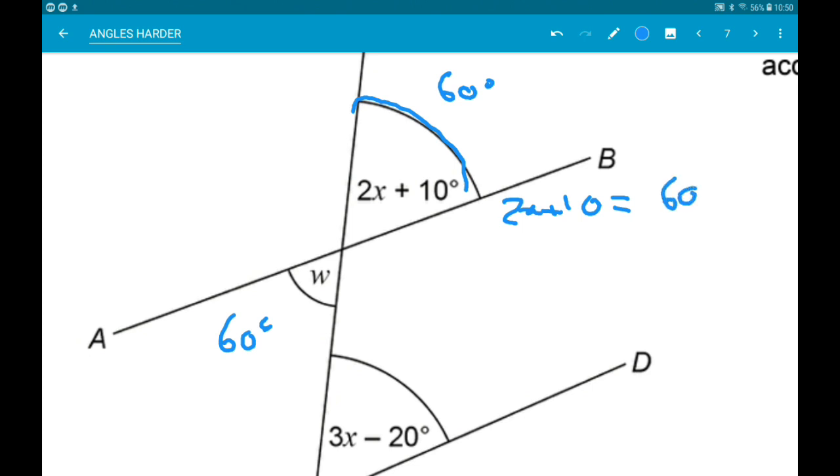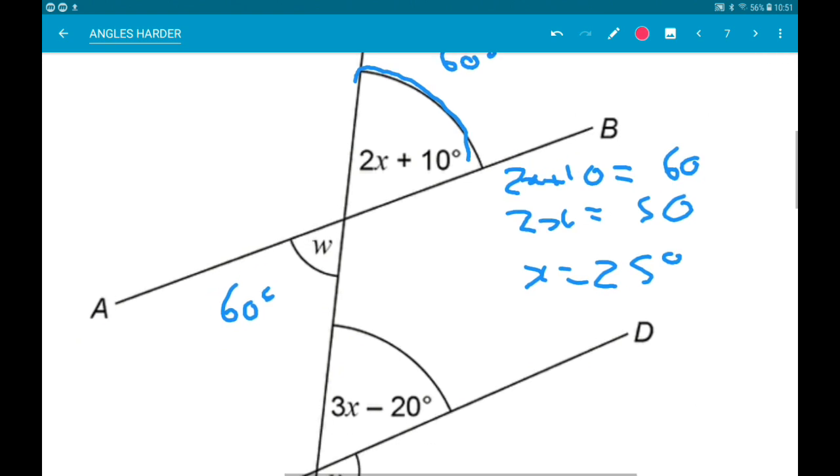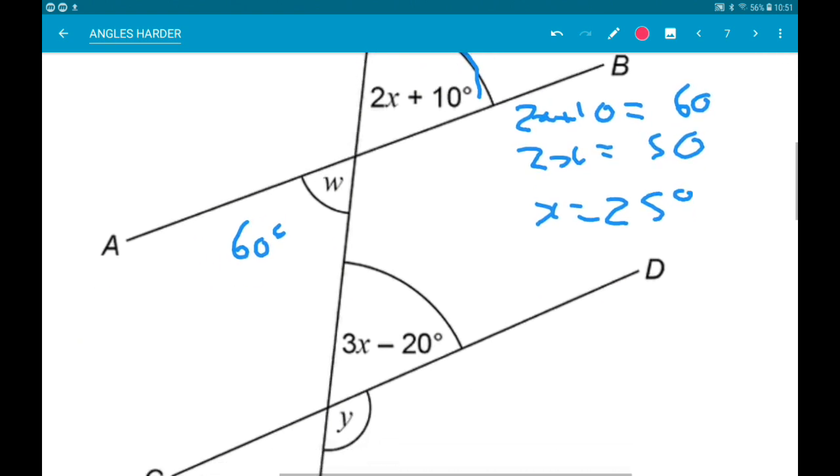So now that we know that we can work out the size of 3x minus 20. So 3 times 25 minus 20 is 55 degrees.